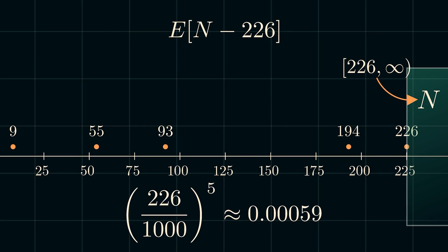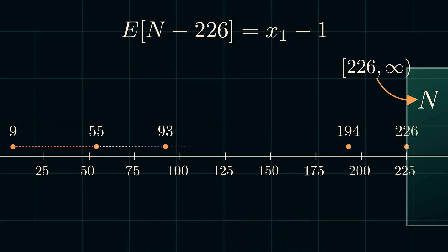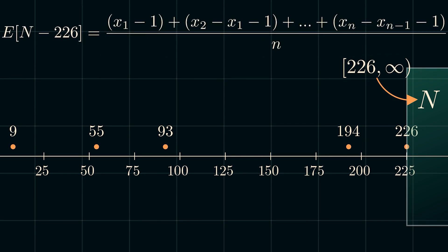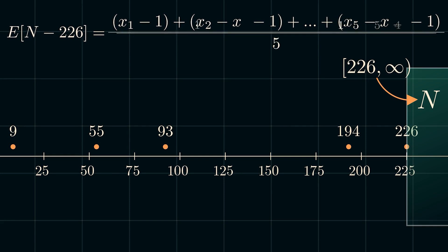Again, it is expected that the gap we're looking for, the gap between 1 and the sample minimum, are equal to each other. Using the same process as before, set expectation of n minus 226 equal to the sum of the gaps divided by the sample size. Now we can fill out the x's with our specific sample values, and we have 5 tanks, so n equals 5.